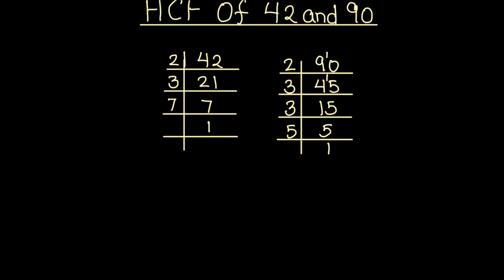Let's write the numbers as the product of their prime factors. 42 is 2 times 3 times 7 times 1.